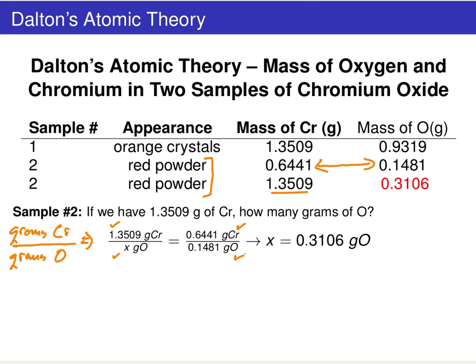We can solve for x and arrive at a mass of oxygen of 0.31 grams. That's interesting in its own right, and Dalton did this for many different types of samples and got these same sorts of results.